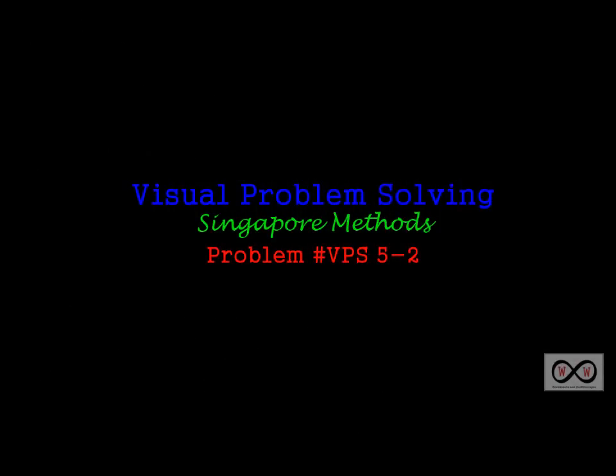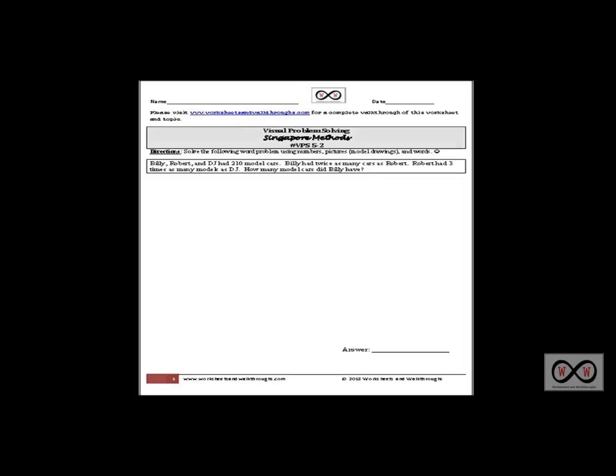Hello and thank you for visiting worksheets and walkthroughs.com. In this video walkthrough lesson we're going to continue our look at visual problem solving using Singapore methods. This is problem number VPS 5-2. We'll be using this worksheet. You can go to worksheets and walkthroughs.com to print out a copy for yourself. You'll find it under our Singapore methods section. It's entitled Visual Problem Solving and this is worksheet number VPS 5-2. Let's get started.